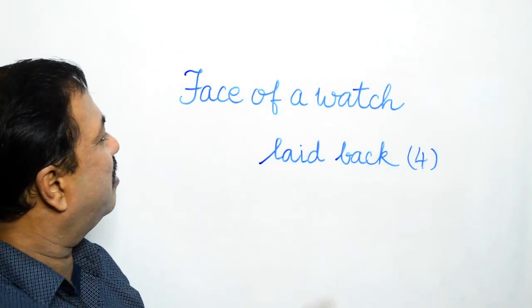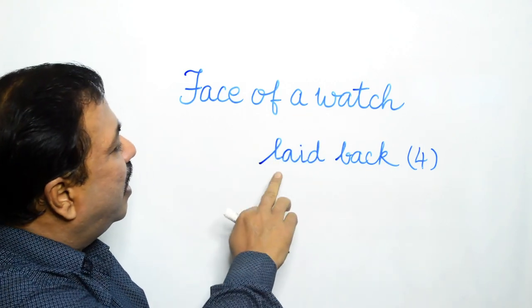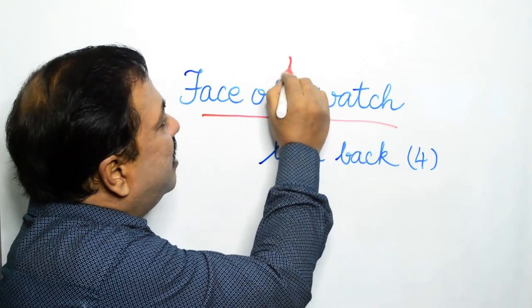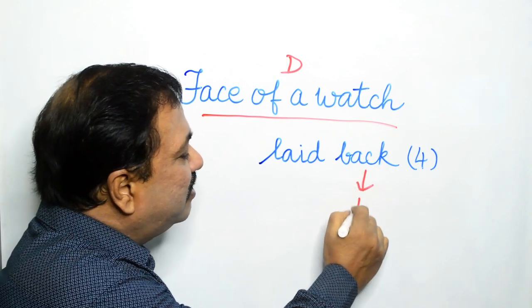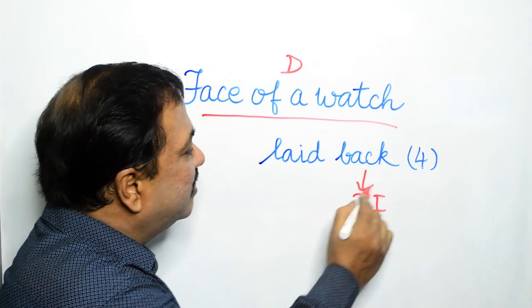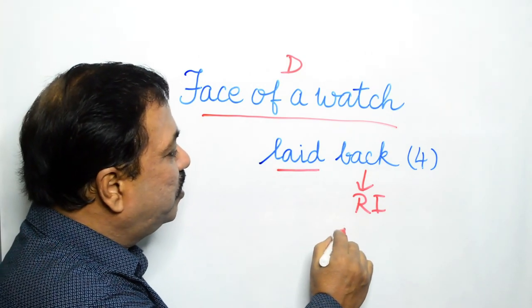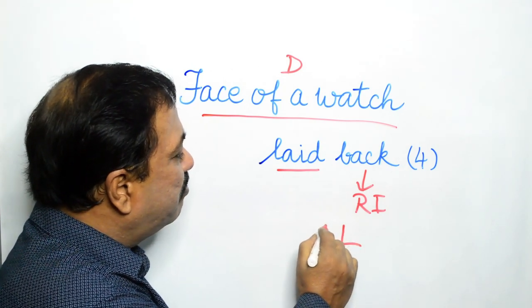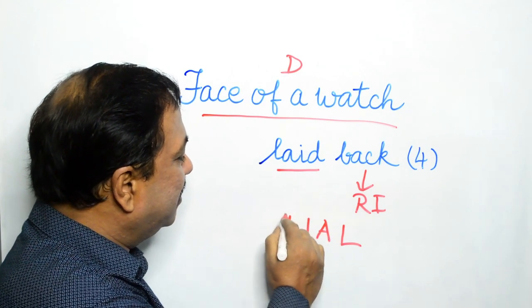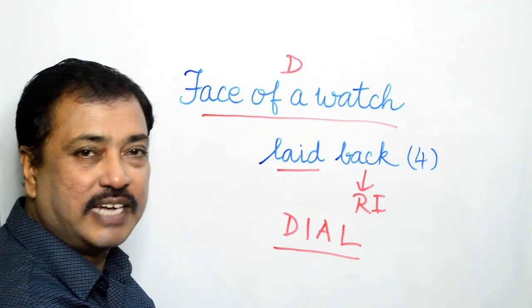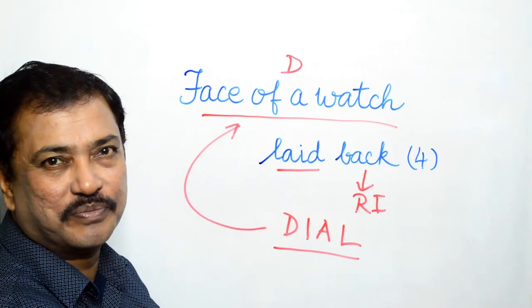Our next clue: Face of a watch laid back. Face of a watch is the definition, the rest is wordplay. Back alone is the reversal indicator, and laid is the reversible word. So what we do? We write from backwards L-A-I-D, and we get dial, which is the face of a watch. So our answer is dial.